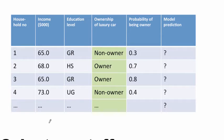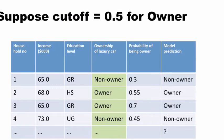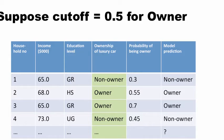By default, the cutoff probability may be 0.5. We select a cutoff and based on the cutoff we do the classification. If the cutoff is 0.5 for being an owner, then anything above 0.5 will be classified as an owner, and the rest as non-owners. But there's no hard and fast rule that says the cutoff has to be 0.5.